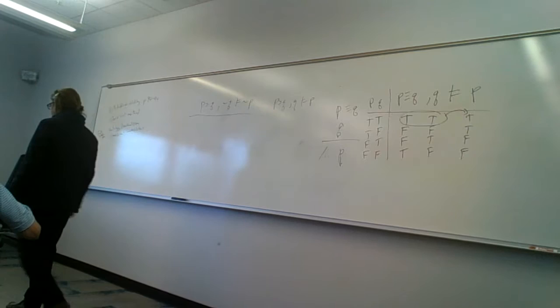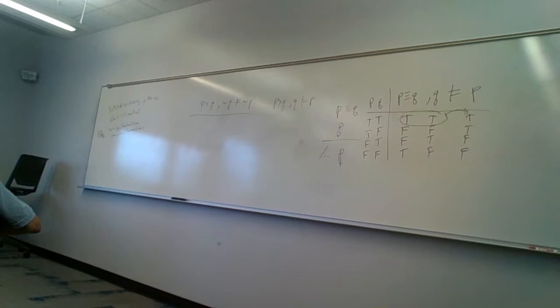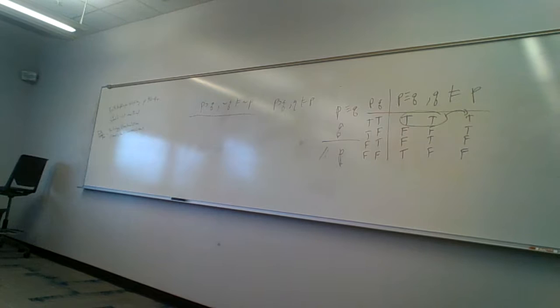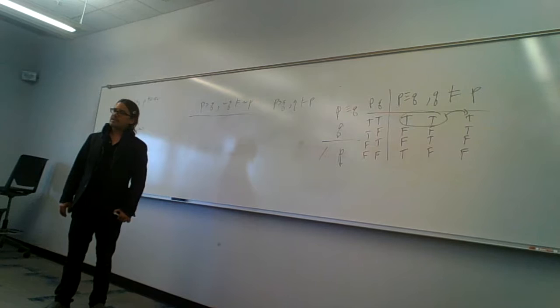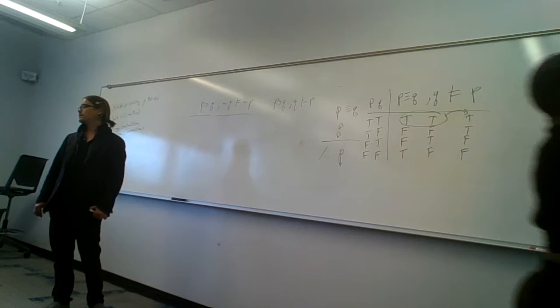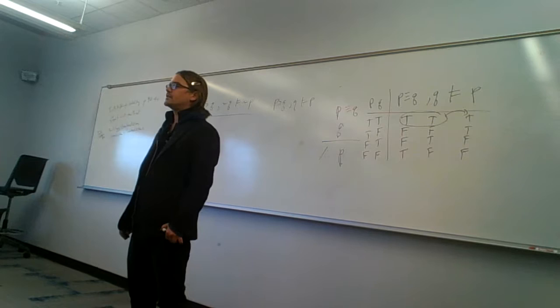So the principle — and some of you may have started to discover this — when you're calculating these tree values, what is the only thing you're looking for? What is the only thing you care about? Whether or not there's a counterexample. So the question of answering validity or invalidity is: is there a counterexample? If the answer is yes, then you know it's invalid. If the answer is no, you know it's valid.